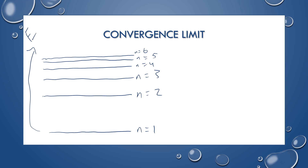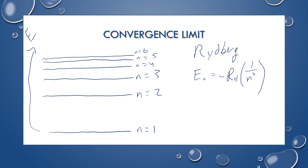There is something called the Rydberg equation, specifically for hydrogen energy levels. The energy of a particular level is equal to the Rydberg constant for hydrogen times 1 over N squared. You don't have to know the equation in detail, but we should understand that the difference between two levels is larger when the energy levels are small, because of this inverse relationship. When the energy levels get very large, the fraction gets significantly smaller — that's where you get the concept of a convergence limit.